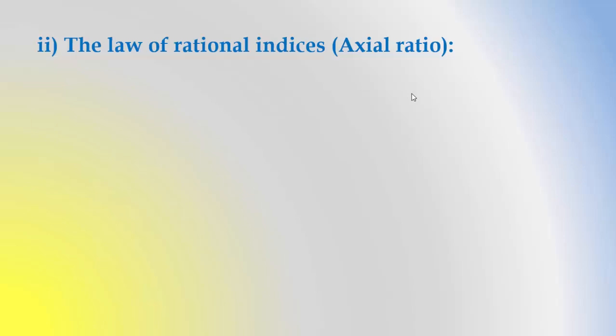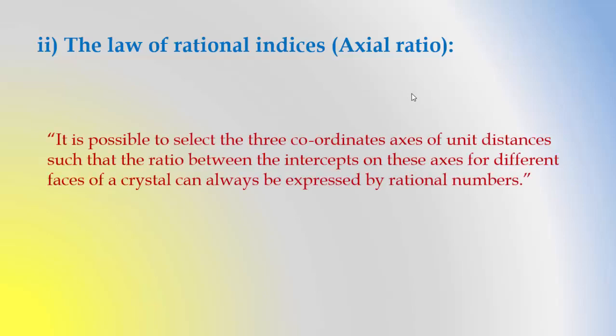Also called axial ratio. It is possible to select three coordinate axes of unit distances such that the ratio between the intercepts on these axes for different faces of a crystal can always be expressed by rational numbers.